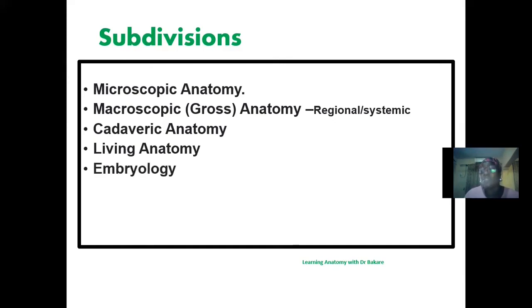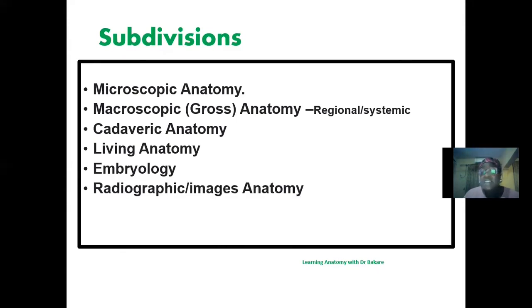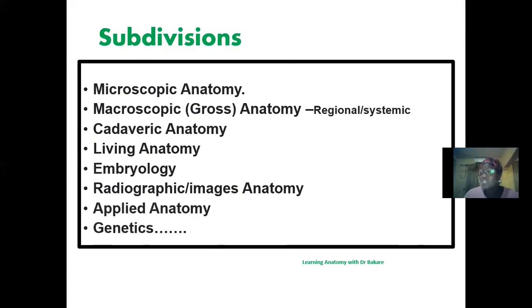Embryology is developmental anatomy, establishing the developmental process from fertilization to the final maturation of the baby. Radiographical image anatomy uses radiographic images to study anatomy. Applied anatomy uses knowledge of anatomy to evaluate disease conditions and provide solutions. Genetics involves the transformation of genetic characters from parents to offspring. These are the different subdivisions of anatomy.